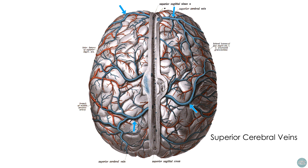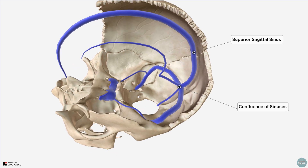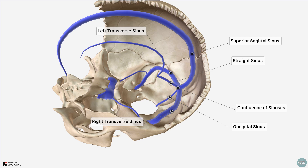The superior sagittal sinus then connects with several other sinuses at the confluence of sinuses, where the superior sagittal, straight, occipital, and transverse sinuses meet.